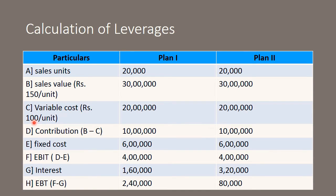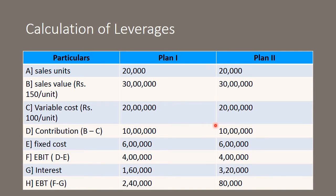Variable cost will always remain the same — 100 rupees per unit — so it would be 20 lakh rupees for both plans. Contribution is calculated as sales minus variable cost. Sales value is 30 lakhs and variable cost is 20 lakhs, so 30 lakhs minus 20 lakhs = 10 lakhs for Plan A as well as Plan B, since there is no change in these figures.